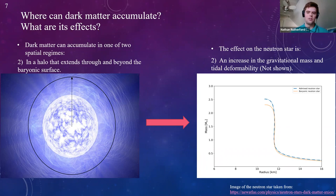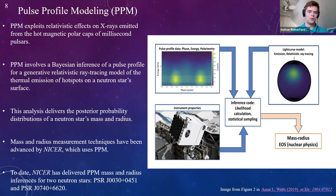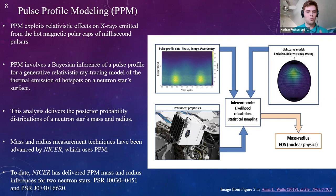Searching for the observable effects of dark matter on neutron star interiors requires measurements of mass and radius. The state-of-the-art method is pulse profile modeling (PPM), which exploits the relativistic effects of X-rays emitted from the hot magnetic polar caps of millisecond pulsars, and involves Bayesian inference of a pulse profile for a generative relativistic ray-tracing model of the thermal emission of hot spots on the neutron star surface.